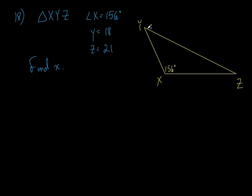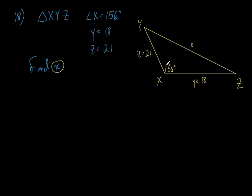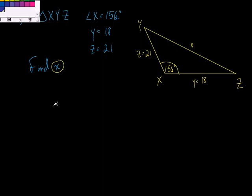Side y is 18 — if I call this angle Y, side y has to be the side opposite it, so little y equals 18. Side z, which is 21, is opposite angle Z, so little z equals 21. We're trying to find little x, which is the side opposite the 156° angle. We've got the angle and the two adjacent sides, so this is a perfect opportunity to use the law of cosines.